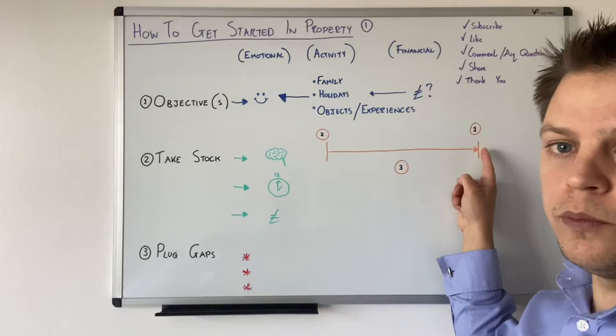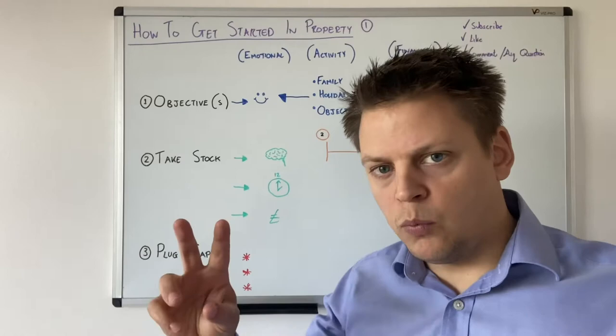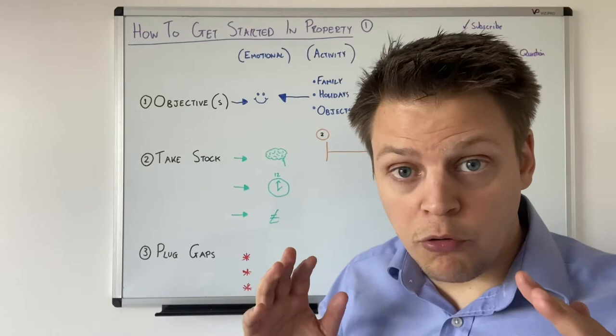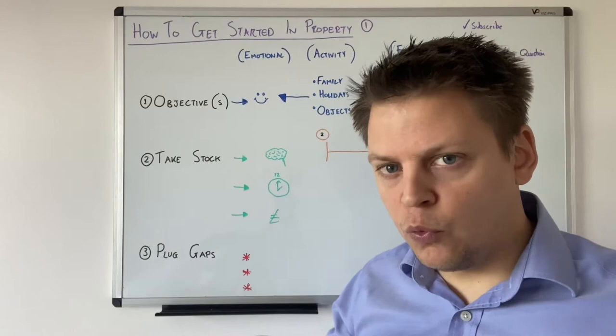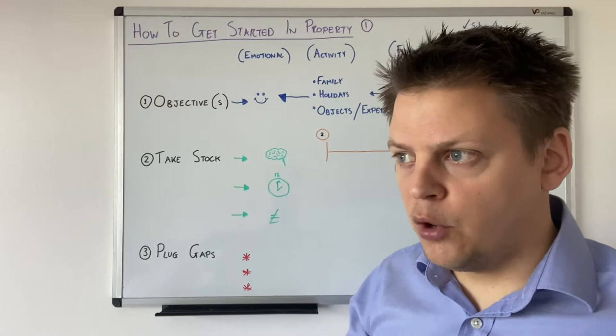Next is take stock. I often hear it said in property that you need time, money, and skill — or time, money, and knowledge. And I absolutely agree you do. However, I don't think there's perhaps enough thought given to the order in which those things are required. I don't think you first need time — what you actually need is knowledge. You need information upon which you take activity.